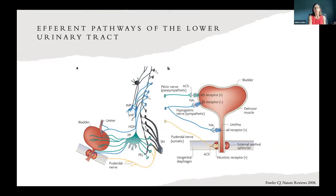The other component of the lower urinary tract is the urethra, which has an abundance of alpha-1A and D receptors and nicotinic receptors. It's innervated by the noradrenergic or sympathetic system and the cholinergic or somatic system. There are two phases of bladder and urethral function: storage of urine and voiding. During the storage phase, the bladder is relaxed and the urethra is closed and contracted. During the voiding phase, the bladder is contracting and the urethra is open.